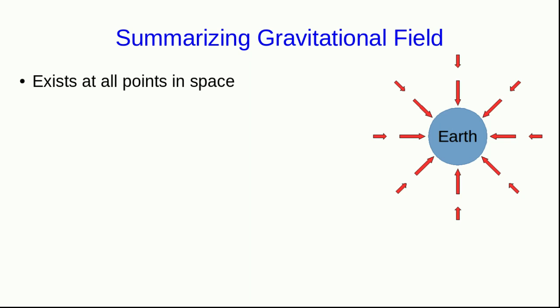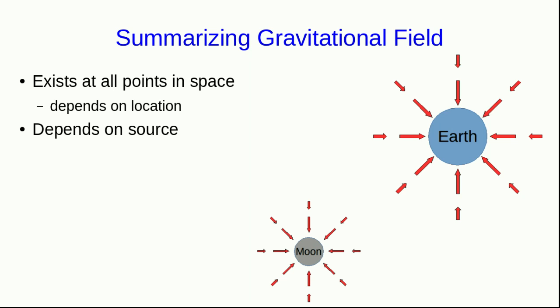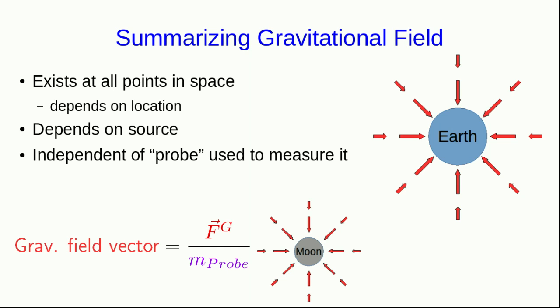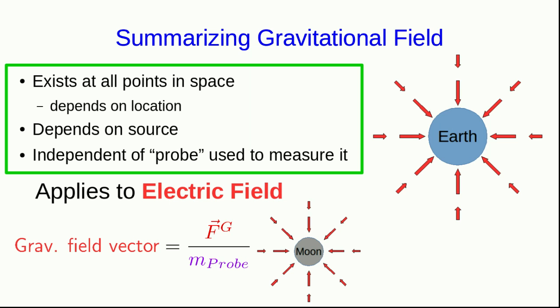Let's summarize these properties of the gravitational field because all of these properties will hold for an electrical field as well. It exists at all points in space, and it depends on location. So while near the Earth's surface, it's g down, if you go farther away from the Earth, its magnitude decreases. It depends on the source. So for example, if you measure the gravitational field due to the Moon, you will find that it's weaker. And it's independent of the probe used to measure it. That's because the gravitational force is proportional to the mass of the probe you use, but you then divide that out. And so you get an answer that's independent of the probe.